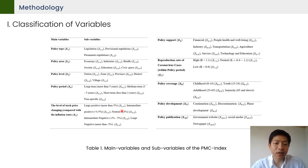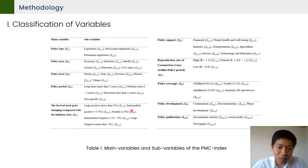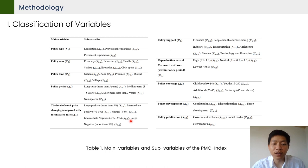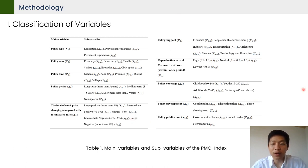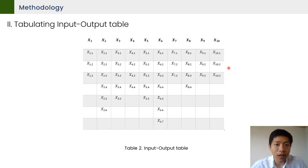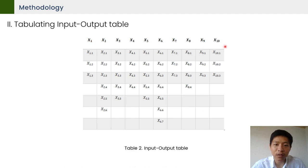For x5.1, it is when the stock has a large positive change of more than 5%. x5.2 means an intermediate positive change of 3 to 5%, and x5.3 is a neutral level of around not more than plus or minus 3%. All main and sub-variables are tabulated into the input and output table as shown on table 2.